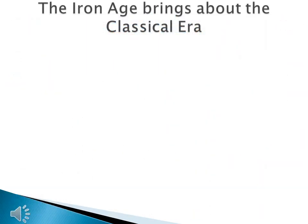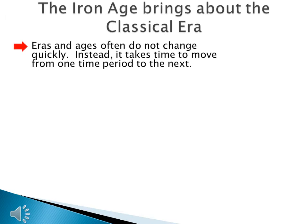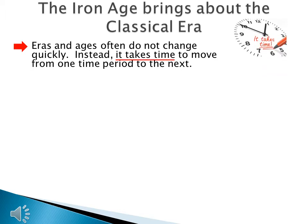The cool thing about Greece is that we can see how history moves between one era and the next, and how an age can bring about a new era. In this case, the Iron Age brings about the classical era. Eras and ages often do not change quickly. Instead, it takes time to move from one time period to the next. It's like the tide at the ocean — you don't just go from low tide to high tide; there's all this space in between where the ocean either moves in or moves out.